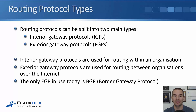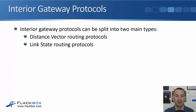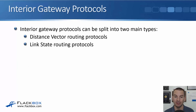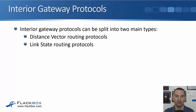There are several different IGPs. Our different IGPs can be split into two main types: either distance vector routing protocols or link state routing protocols.